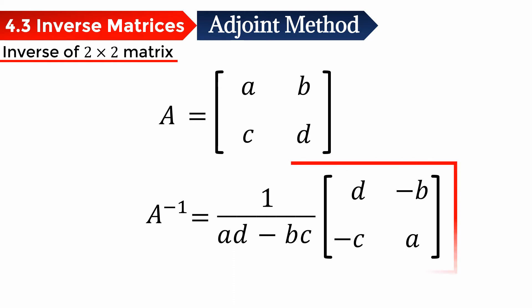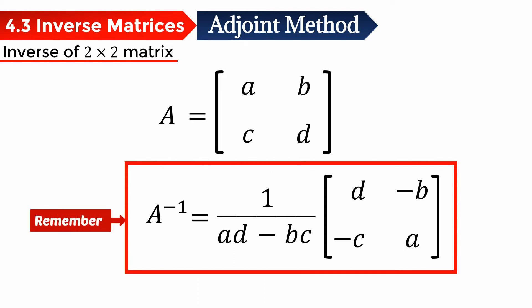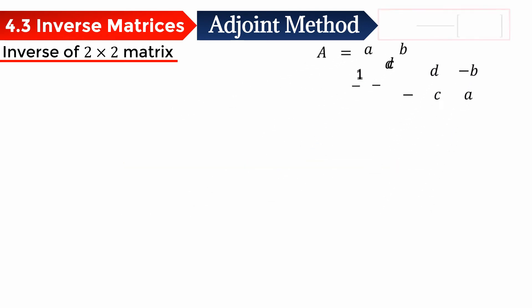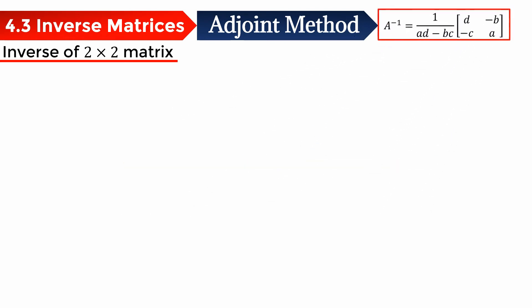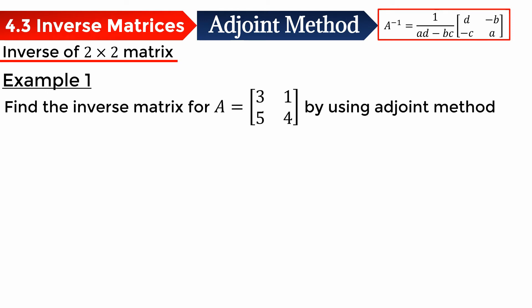You need to remember this formula because the formula is not given in the exam. So let's take a look at some examples. The first example: find the inverse matrix for matrix A with the elements 3, 1, 5, 4 by using the adjoint method.